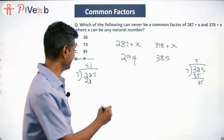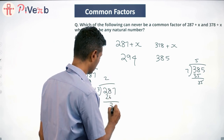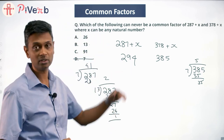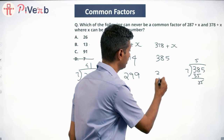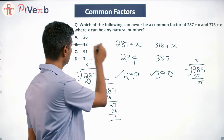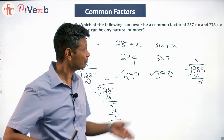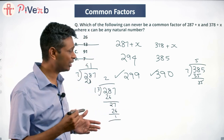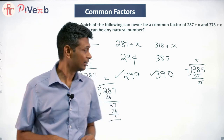Let's see next: could 13 be a common factor? I divide 287 by 13 — 13 × 22 = 286, so the remainder is 1. If we add 12, it becomes a multiple of 13: 287 + 12 = 299, which is a multiple of 13. Then 378 + 12 = 390, which is also a multiple of 13. So 13 also works — we can find a scenario where both are multiples of 13. It looks like maybe every number works when we add the right x.